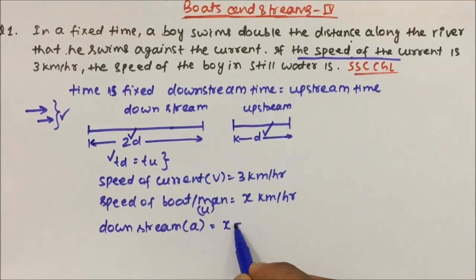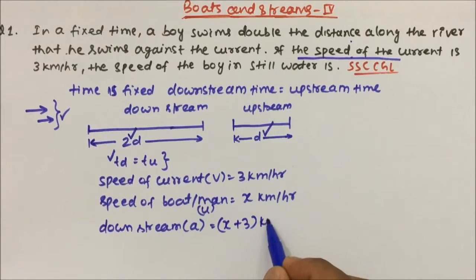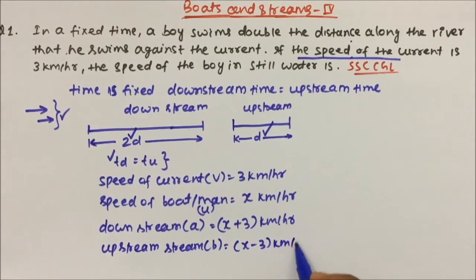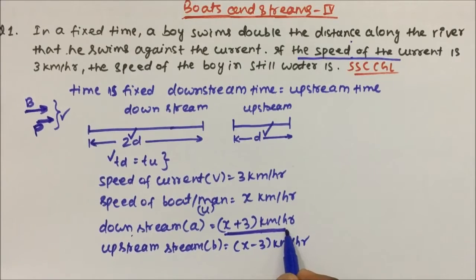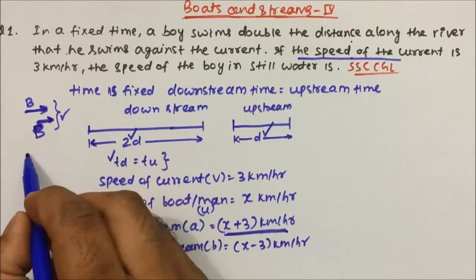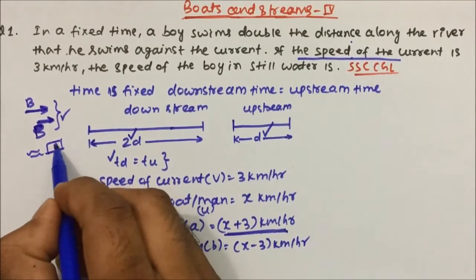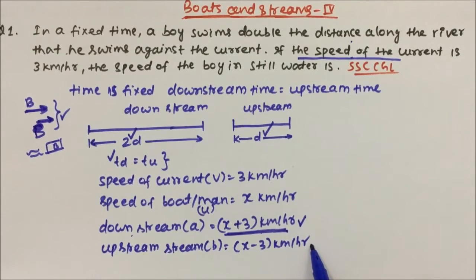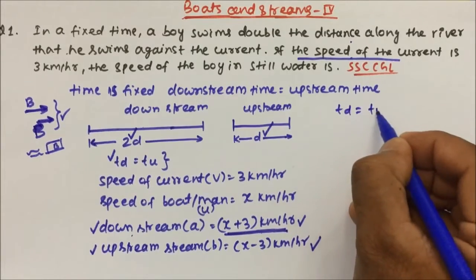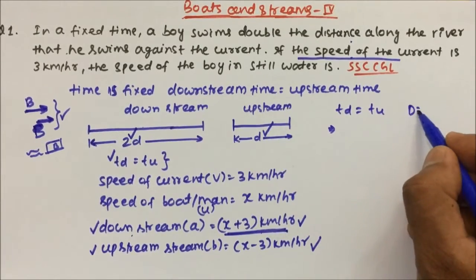Upstream speed is denoted as b, and b = x − 3 km/h. In downstream, the stream pushes the boat forward, so speeds are added. In upstream, the boat moves against the stream, so speed is subtracted. We have distances, speeds, and equal times for both directions. Using the formula d = s × t, so t = d/s.